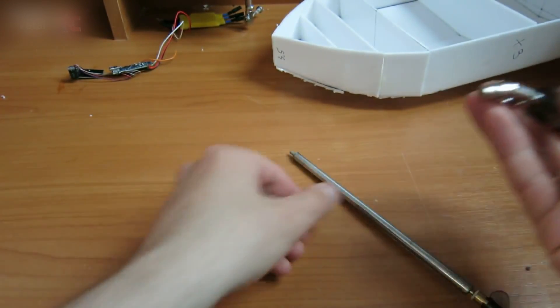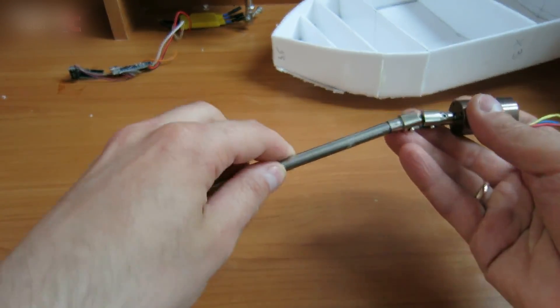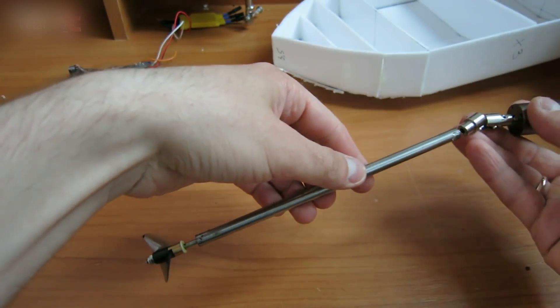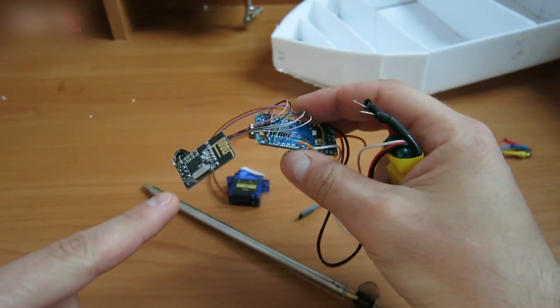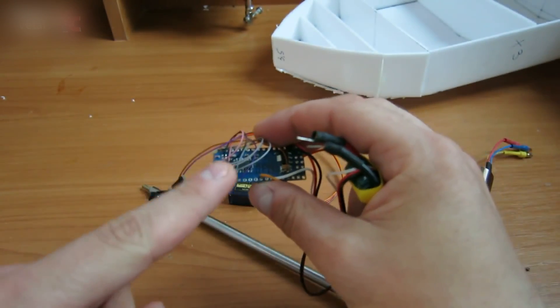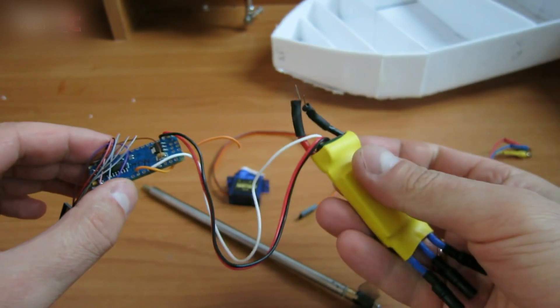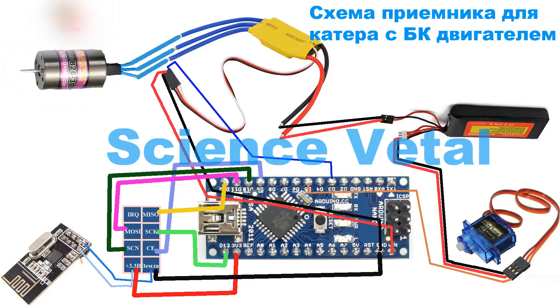Next, we will make the motor transmission, steel tube, and propeller. The links for all the components are listed in the description of the video. We will use a servo motor for a turning mechanism. The boat's electronic components are made up of an Arduino, a radio module, and a speed regulator.